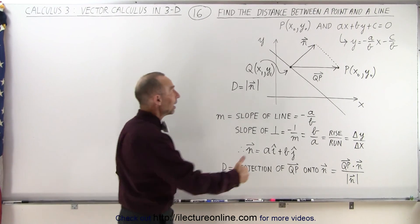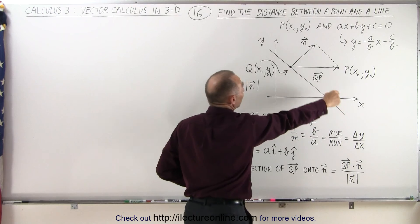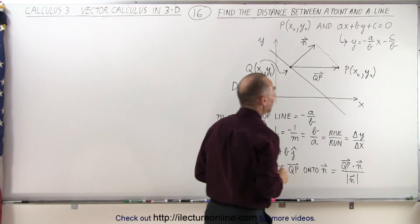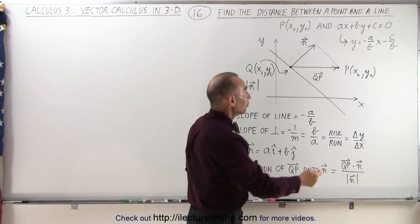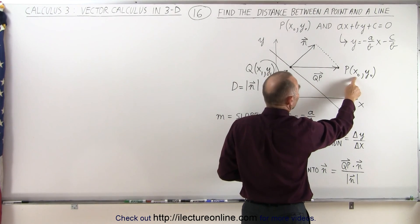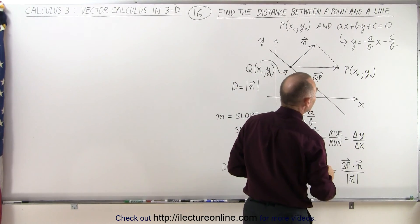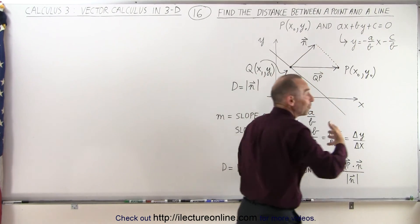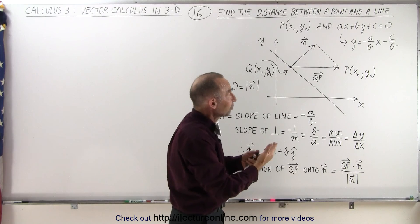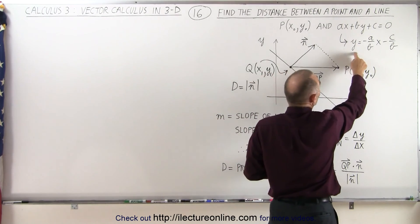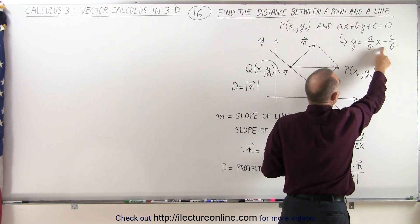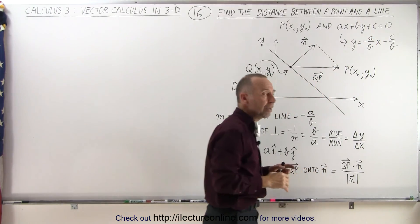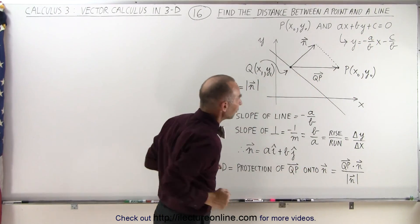Here we have the line, defined by the equation AX plus BY plus C equals zero. We have an arbitrary point P defined by X-sub-naught, Y-sub-naught. If you want to put this equation in a more familiar form, Y equals MX plus B, it would be written as Y equals negative A over B times X minus C over B, such that the slope of the line is negative A over B. But we simply have it drawn in a general fashion.